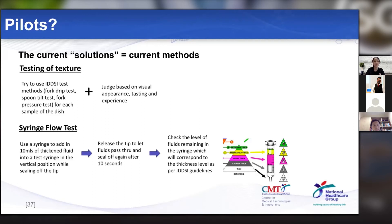For fluids, when auditing thickened fluids being served to patients, the syringe flow test is used, which is very time-consuming. It involves putting the thickened fluids into a syringe, releasing it, and identifying whether it passes or fails the test. Usually, you have to do it a number of times to ensure that the testing is accurate.